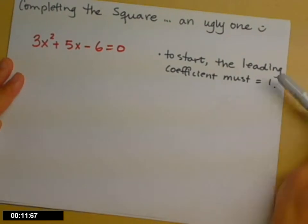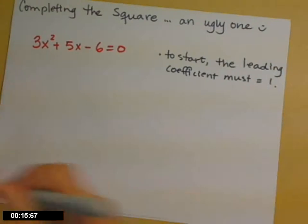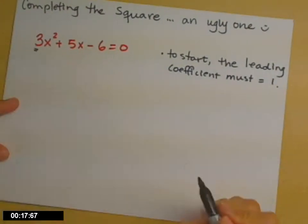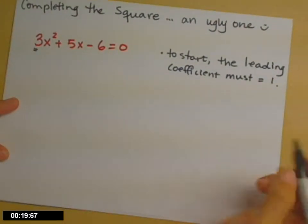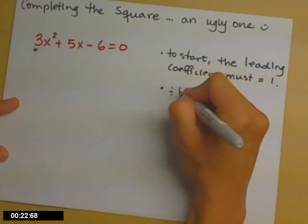So the first thing you need to know is that before we complete the square, we need to have a leading coefficient of 1. Currently, as you'll see, our leading coefficient is 3. So to make that be a 1, what we're going to do is divide both sides